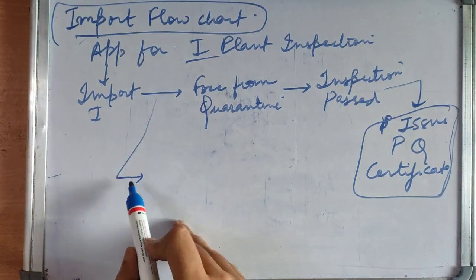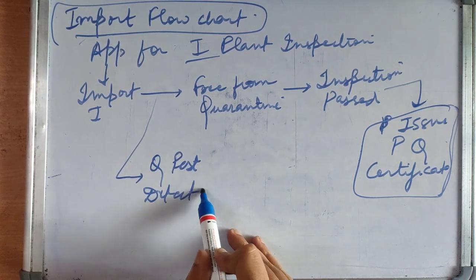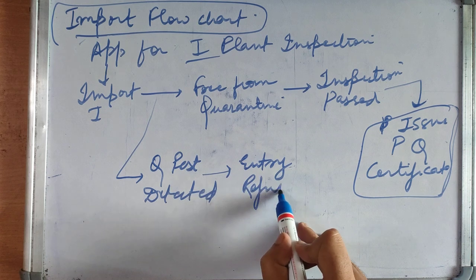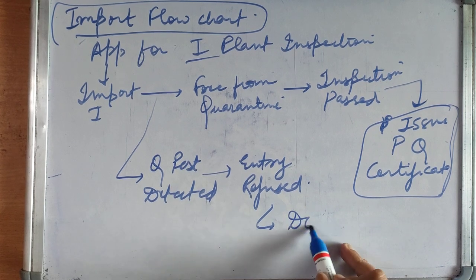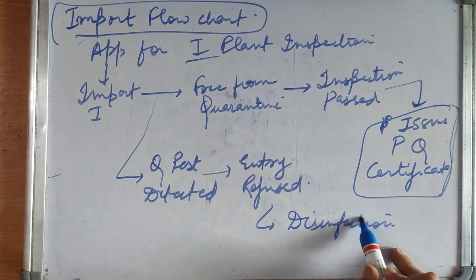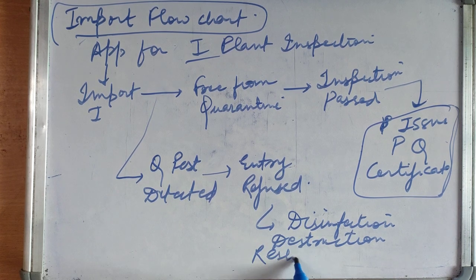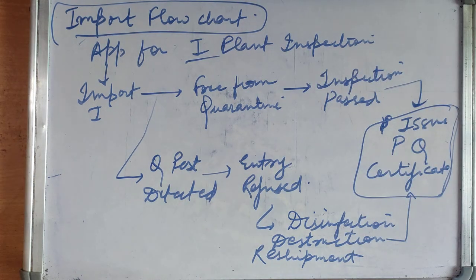But there can be another outcome after import inspection: quarantine pests are detected in the import material, so the entry will be refused. Then disinfection, destruction, or re-export can be done. First we can do disinfection or destruction of the pest, and if not controlled by these two, we can request re-export. The shipment will again go through import inspection, and if it passes, the plant quarantine certificate confirms the pest was disinfected and now this import can be used.